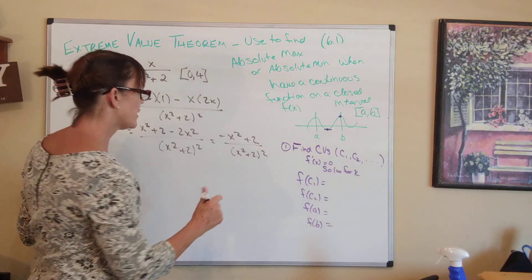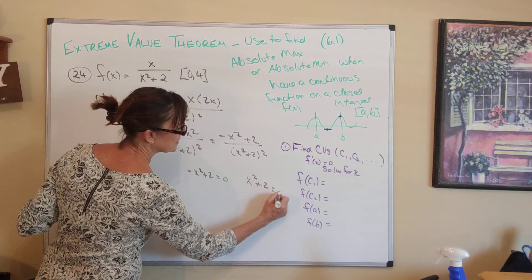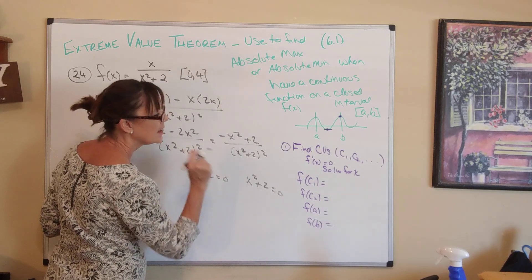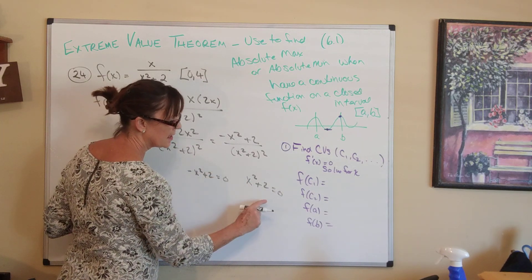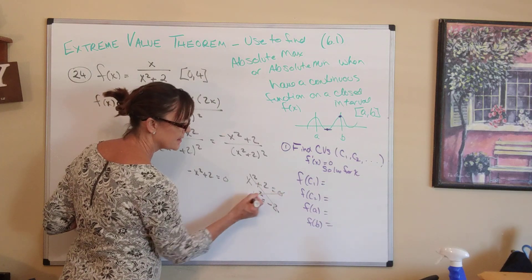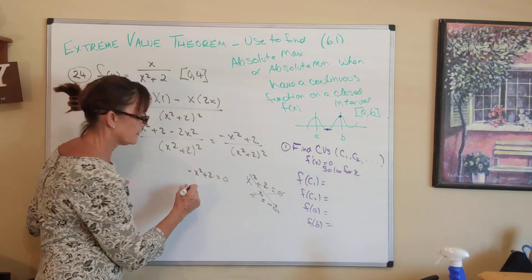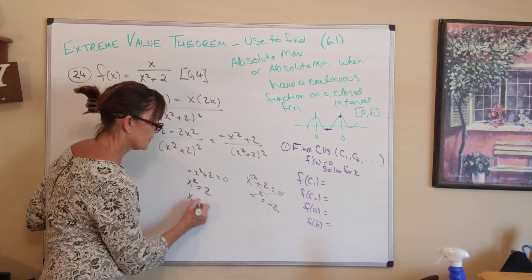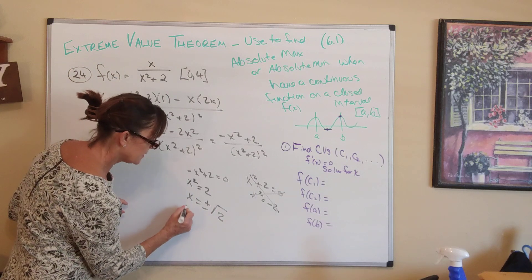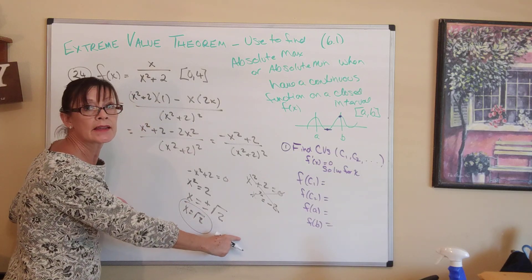To find critical values, set the numerator equal to zero: −x² + 2 = 0, and set the denominator equal to zero. For the denominator, x² + 2 = 0 gives x² = −2, which yields imaginary numbers — disregard that. For the numerator, x² = 2, so x = ±√2. Only x = √2 is on the interval [0, 4], so that's our critical value. We disregard the negative √2.